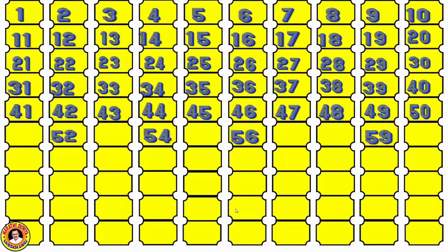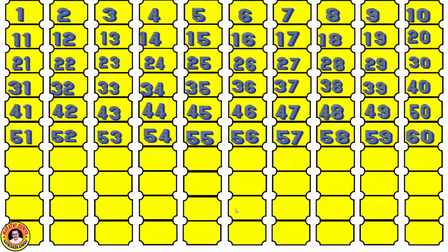Next. The given numbers are 52, 54, 56, and 59, and the remaining numbers are 51, 53, 55, 57, 58, and 60. We complete the line from 51 to 60.